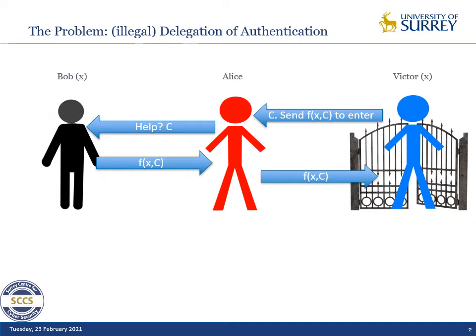The problem we are looking at is the problem of illegal delegation of authentication. We have an authentication protocol where we have a prover, Bob, knowing a secret key X. We have a verifier, Victor, knowing the secret key X as well. And we have an accomplice of Bob called Alice.